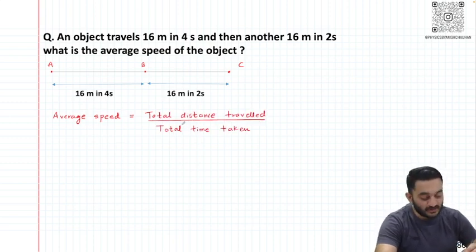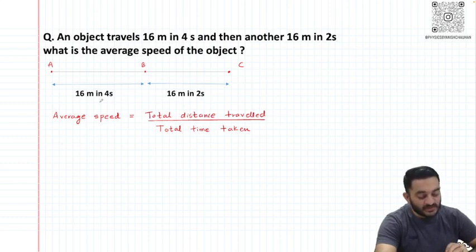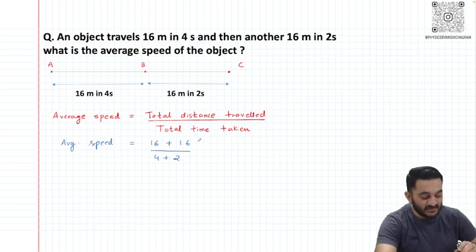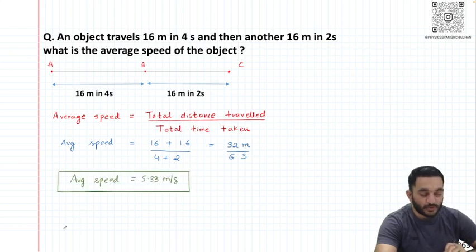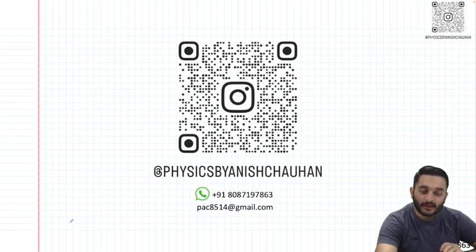This is a simple case where we use the formula that average speed equals total distance traveled over total time taken. The total distance is 16 plus 16, and the total time is 4 plus 2. We get 32 over 6, which is 5.33 meters per second. Thank you.